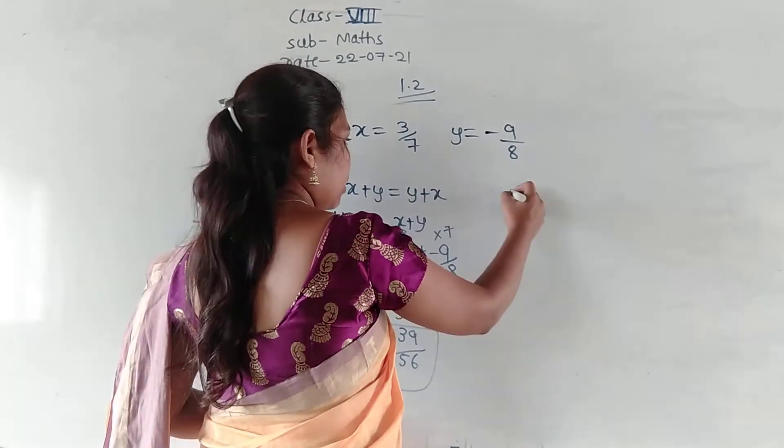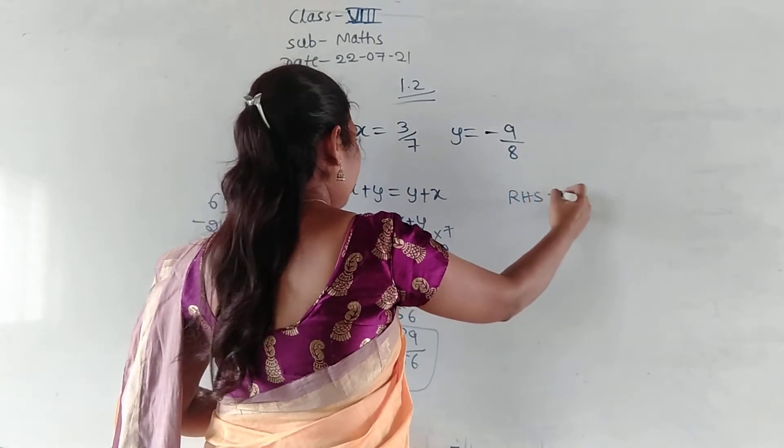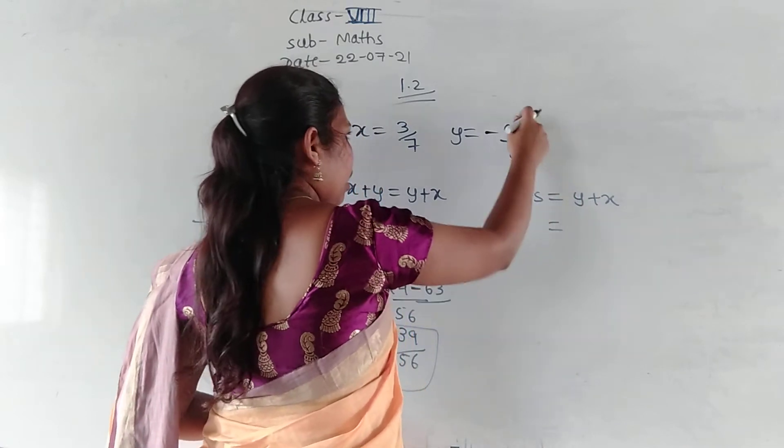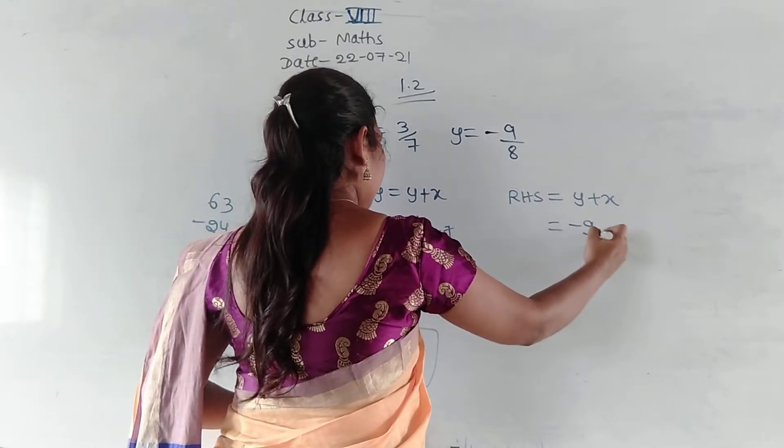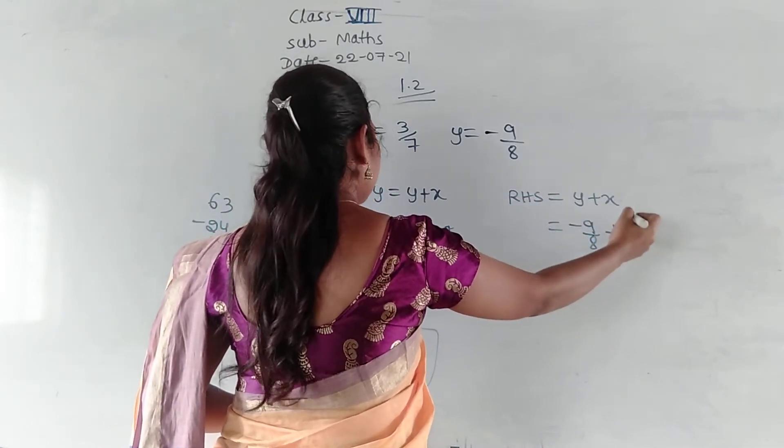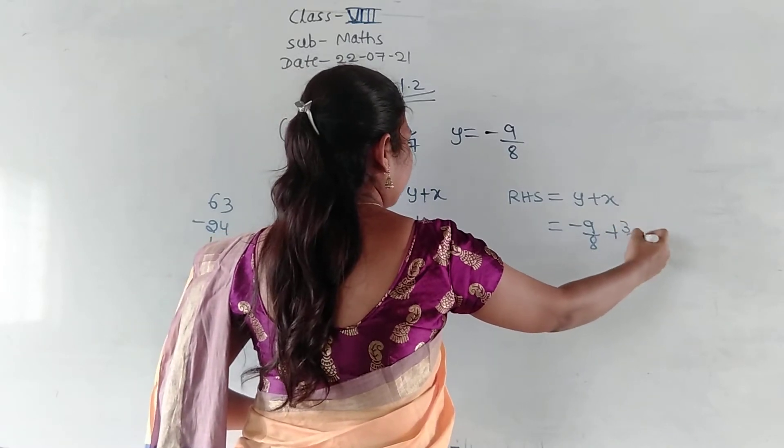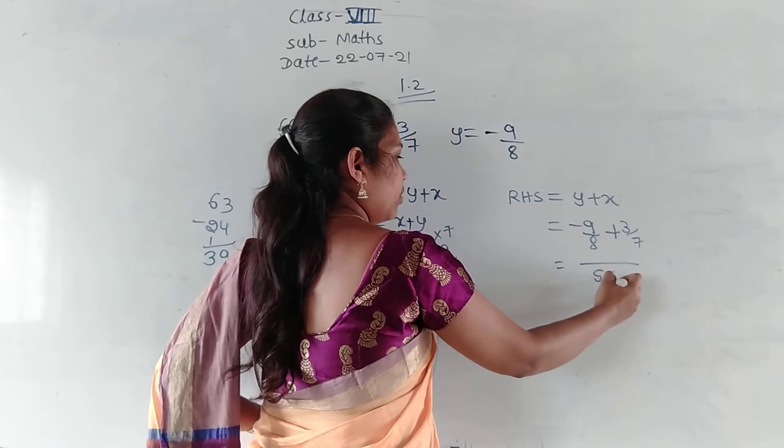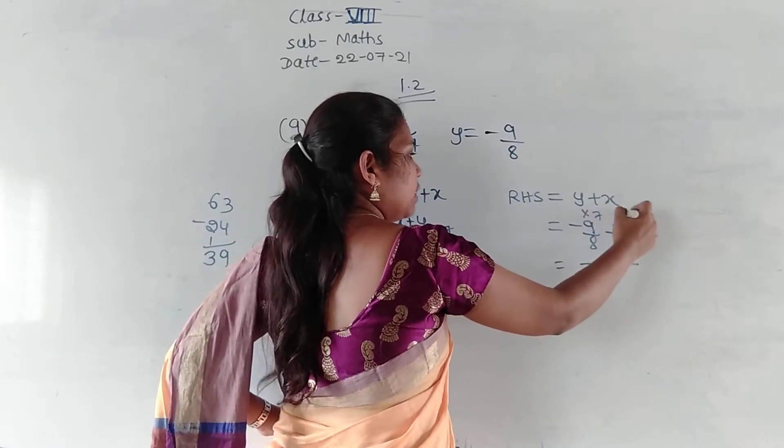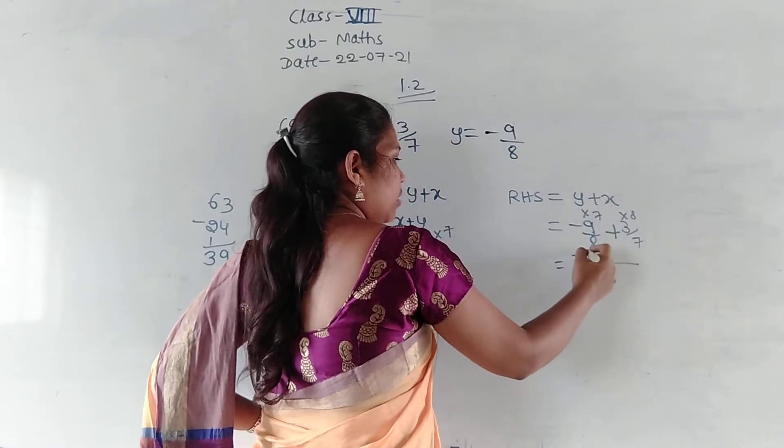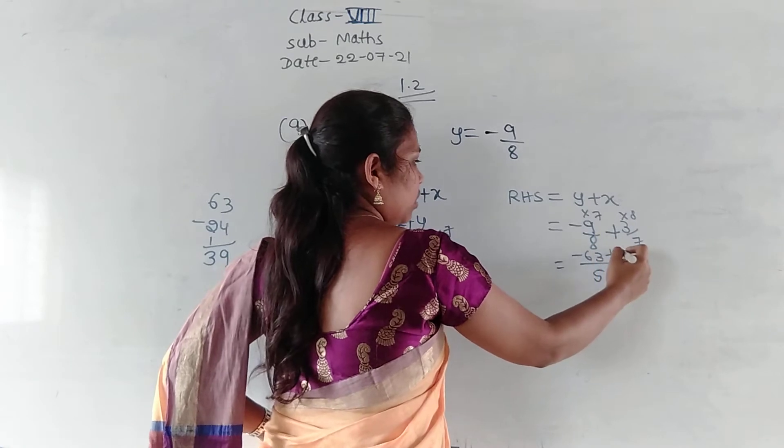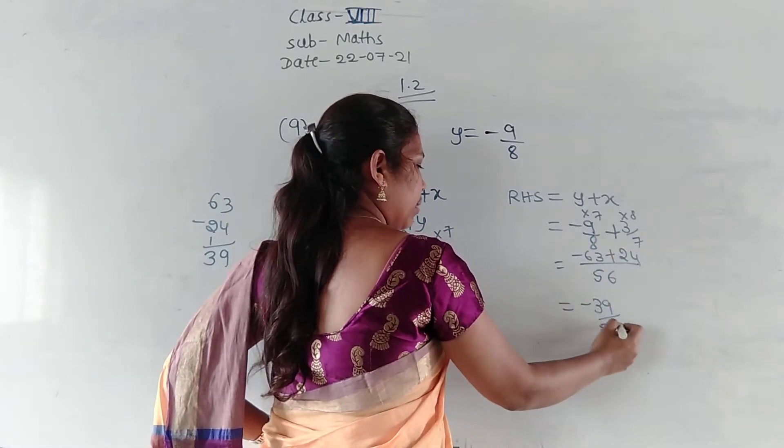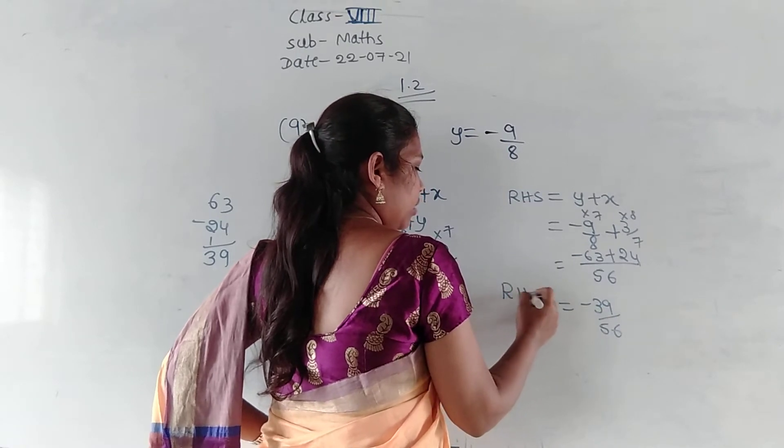Now, write down RHS. RHS is equal to y plus x. Y is minus 9 by 8 plus x is 3 by 7. Same thing. Now, take the LCM. That will be 56. 8 7s are 56. 7 8s are 56. Minus 63 plus 24. So, answer will be minus 39 divided by 56.